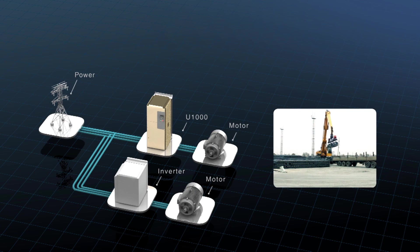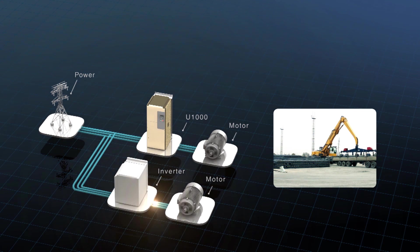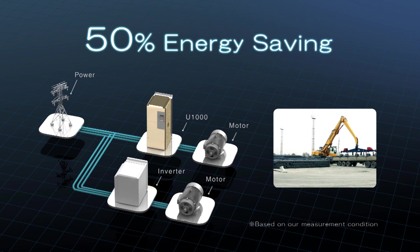The Yaskawa Matrix converter U-1000 can save up to 50% of previously wasted energy by transferring energy to other equipment.